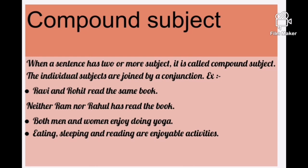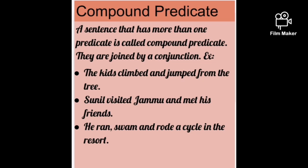What is a compound predicate? Similarly, a sentence that has more than one predicate is said to have a compound predicate. They are joined by a conjunction. For example: 'The kids climbed and jumped from the tree' — two actions are being done: climbing and jumping. Both actions are joined by the conjunction 'and,' so this is a compound predicate. 'Sunil visited Jammu and met his friend' — two actions joined by and.